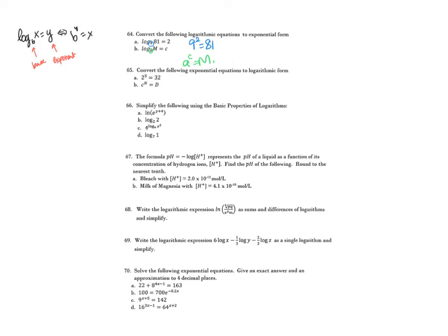Convert the following exponential equations to logarithmic form. This one converts to log base 2 of 32 equals 5. And this one converts to log base C of D equals N.